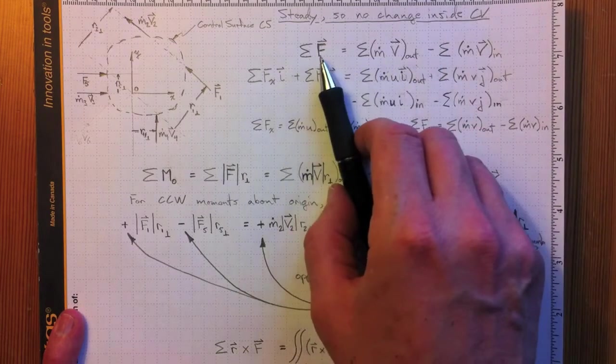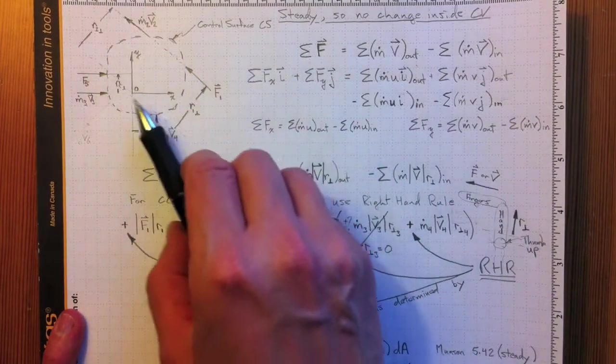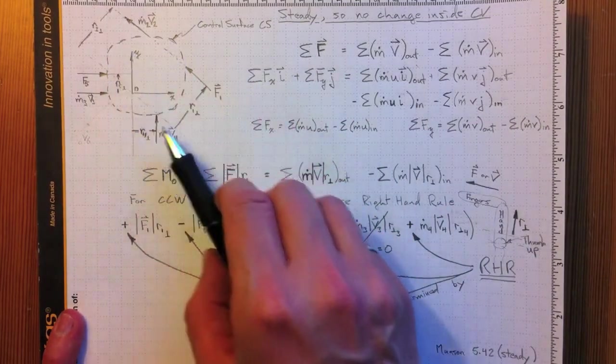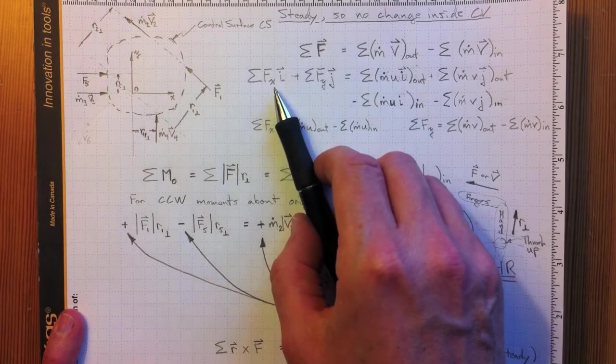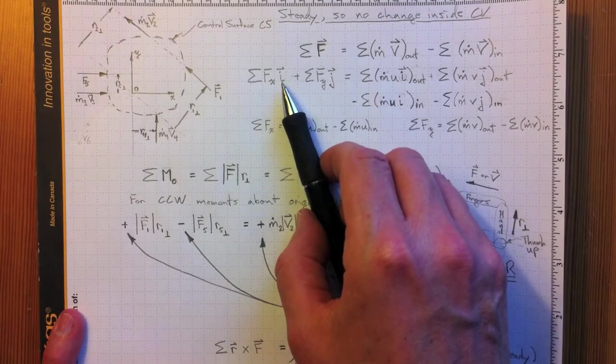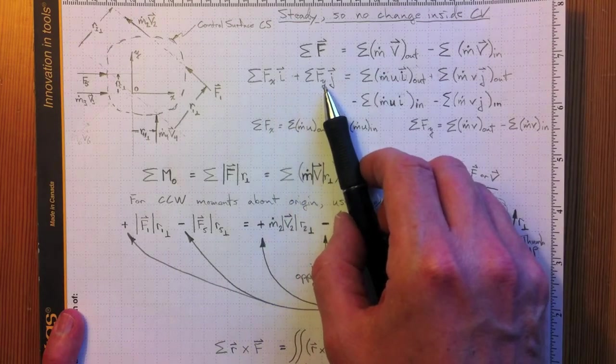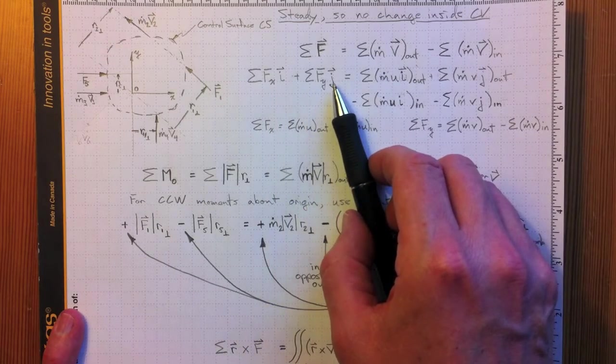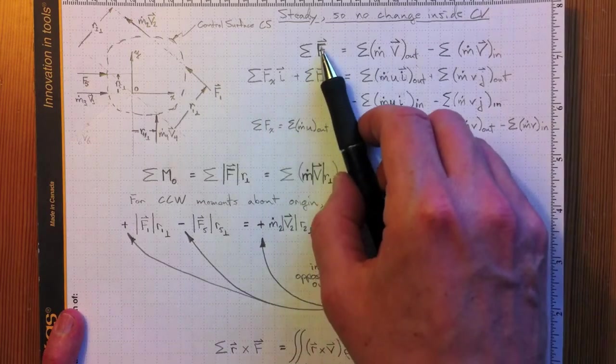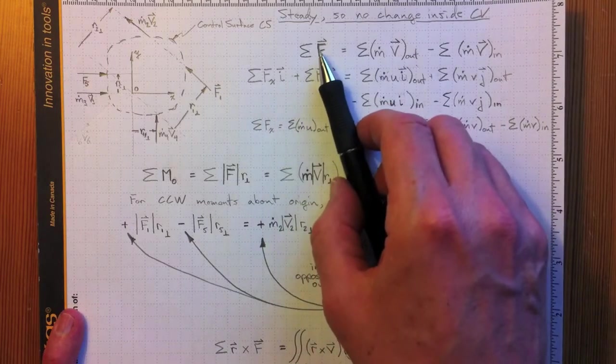If we separate that into two components in a two-dimensional representation with x and y axes, then the sum of the forces in the x direction, the components in the x direction times the x direction vector i, plus the sum of the forces in the y direction times the y direction vector j, will give us the total force vector that was applied.